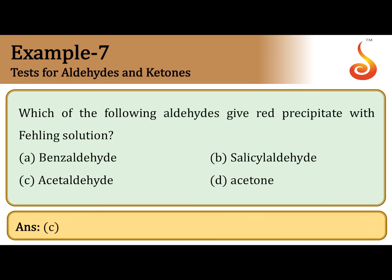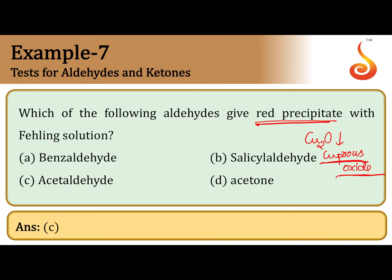Now check the answer: which of the following aldehydes give red precipitate? The red precipitate is due to the formation of water-insoluble cuprous oxide (Cu₂O) — a red color precipitate. So only one aliphatic aldehyde is there, that is acetaldehyde. Acetaldehyde is the correct answer.